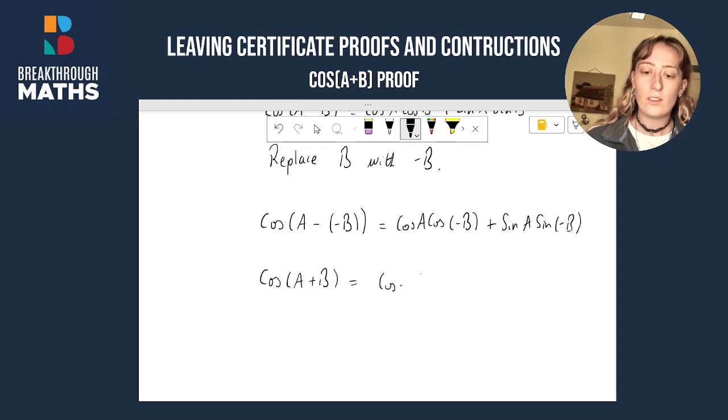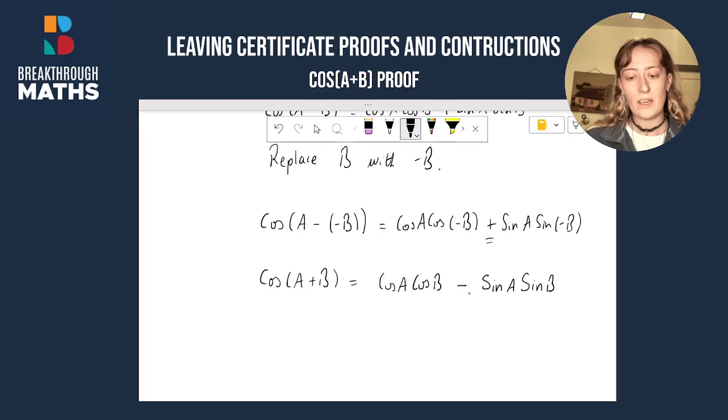This is equal to cos A. Now we said that cos of a minus angle is the same as cos of the same angle, so cos minus B becomes cos B. We said that the sin of a minus angle is minus sin of that angle, so we end up with sin A minus sin B. So this plus here becomes a minus. And we're left with cos A plus B is equal to cos A cos B minus sin A sin B, and we've proved it in just a few lines.